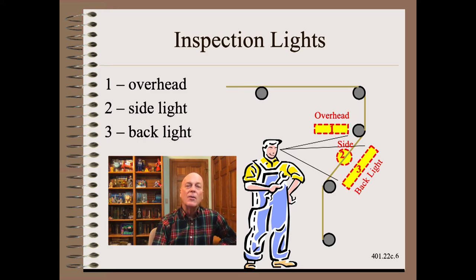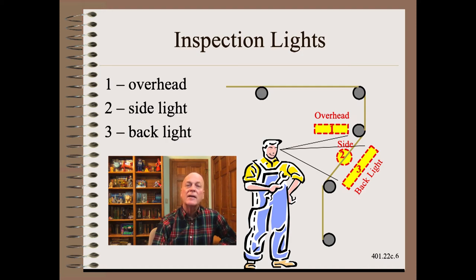Finally, we will add backlighting, which can be most useful to inspect formation as well as for holes. Each light will be independently controlled. Of course, you are not limited to three light sources — some of you may wish to add a strobe light to check for periodic defects, as just one example.